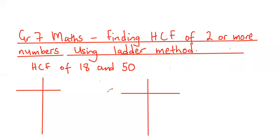How are you guys? Welcome to Grade 7 Maths. I'm going to teach you how to find the highest common factor of two or more numbers. In this case, we want to find the highest common factor of two numbers, and our numbers are 18 and 50.